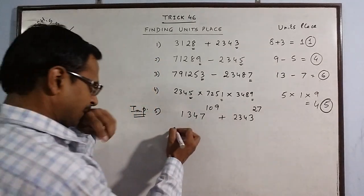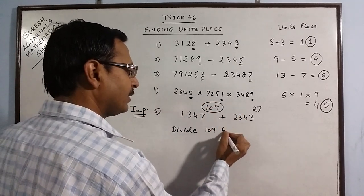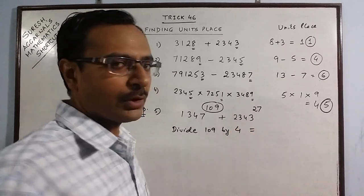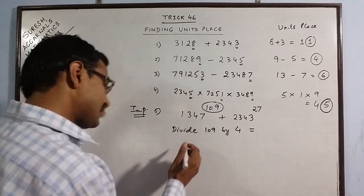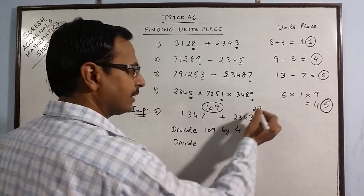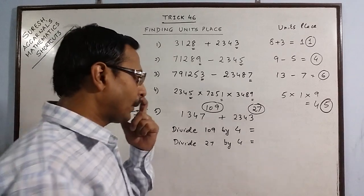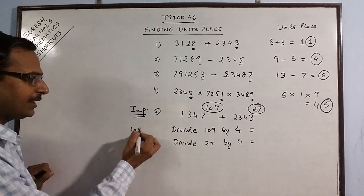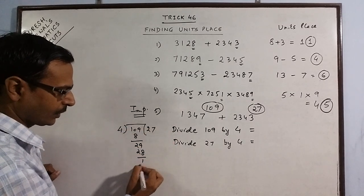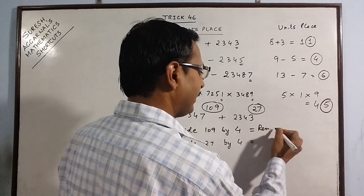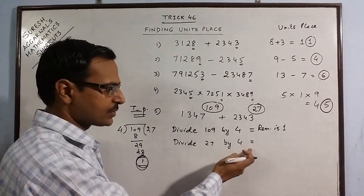The shortcut is: divide the power by 4. This is a standard number — you always divide by 4. When you divide 109 by 4, you get a remainder of 1. Similarly, when you divide 27 by 4 — 4 times 6 is 24 — the remainder is 3. You need to remember these remainders, because the solution is based on them.